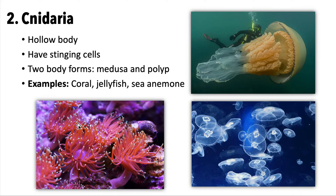Examples in phylum Cnidaria include coral, sea anemones, and jellyfish. It's quite a broad group of organisms that are really fascinating in many ways. That covers unit two — those two phyla together.